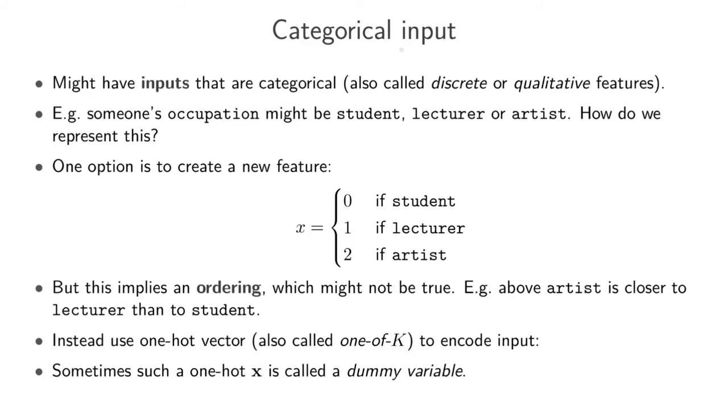Let's look at an example of categorical input. This is also sometimes called discrete input features or qualitative input features. As an example, someone's occupation might be that they're a student, a lecturer, or an artist. This could be an input feature to a model that might want to predict someone's salary, for example, based on multiple features of which occupation is one.